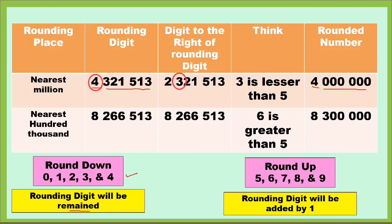Another example: 8,266,513. If we're going to round it off to the nearest hundred thousand, hahanapin lang natin yung rounding digit. The rounding digit is 2, in the hundred thousands place. Then yung right side ng 2, which is 6. Alamin natin kung ang 6 ay round up or round down — 6 is in the round up numbers, 6 is greater than 5. So ang 2 will be added by 1 — ang 2 ay nagiging 3. Yung nasa left side, which is 8, kinopia lang natin, at yung nasa right side ng 2 ay magiging zero. So our answer is eight million three hundred thousand.